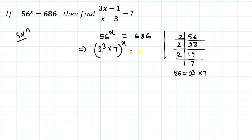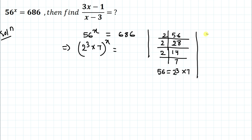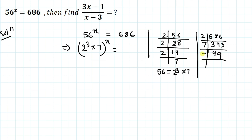Now I will factorize 686. The unit place is 6, so I divide by 2 first, giving 343. The unit place of 343 is 3, which is odd, so it divides only by odd primes. It is not divisible by 3 or 5, but dividing by 7 gives 49, and dividing again by 7 gives 7. So 686 equals 2 multiplied with 7 cubed.